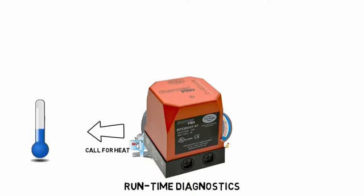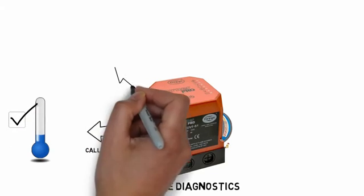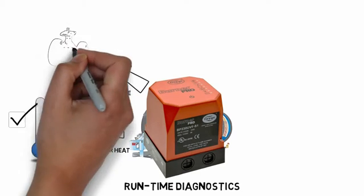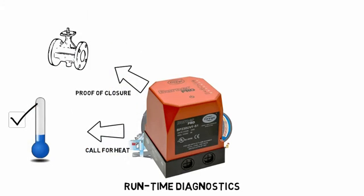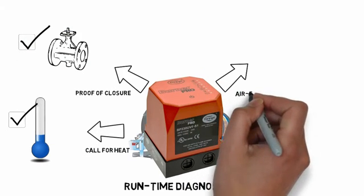Upon receiving a call for heat, the system turns on the combustion air blower and commands the actuator to move to the purge position. Proof of valve closure checks for wiring problems or faulty fuel valves. Air flow proving cycle ensures a proper combustion environment.